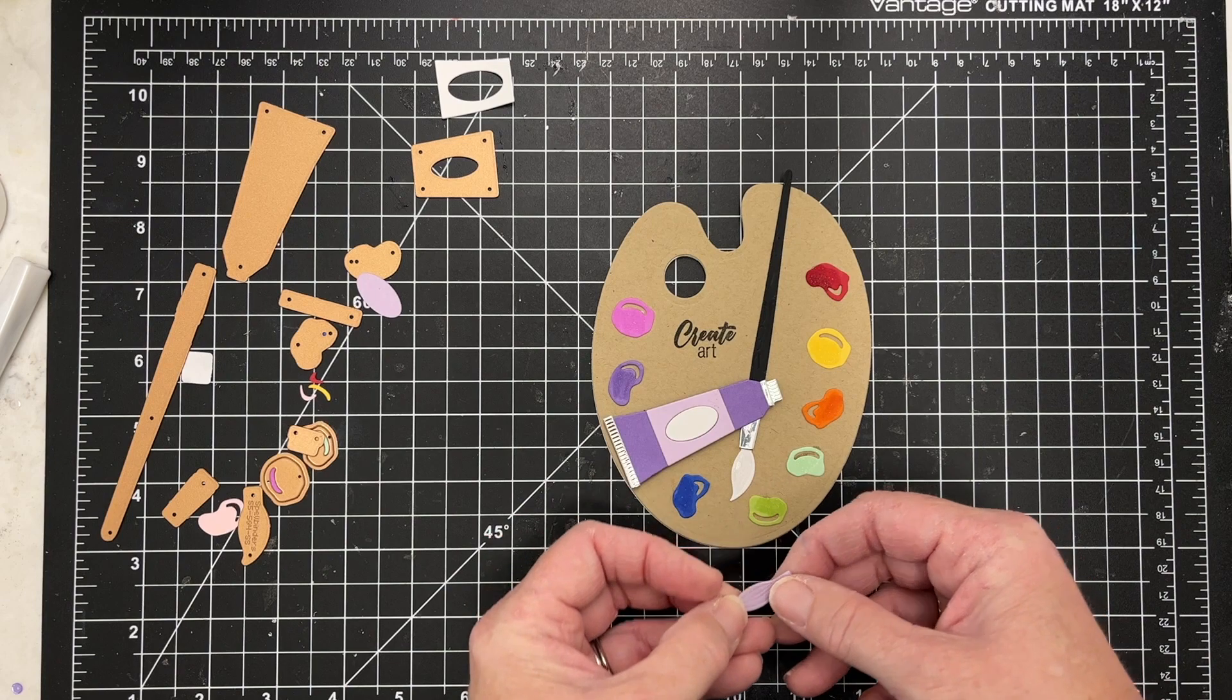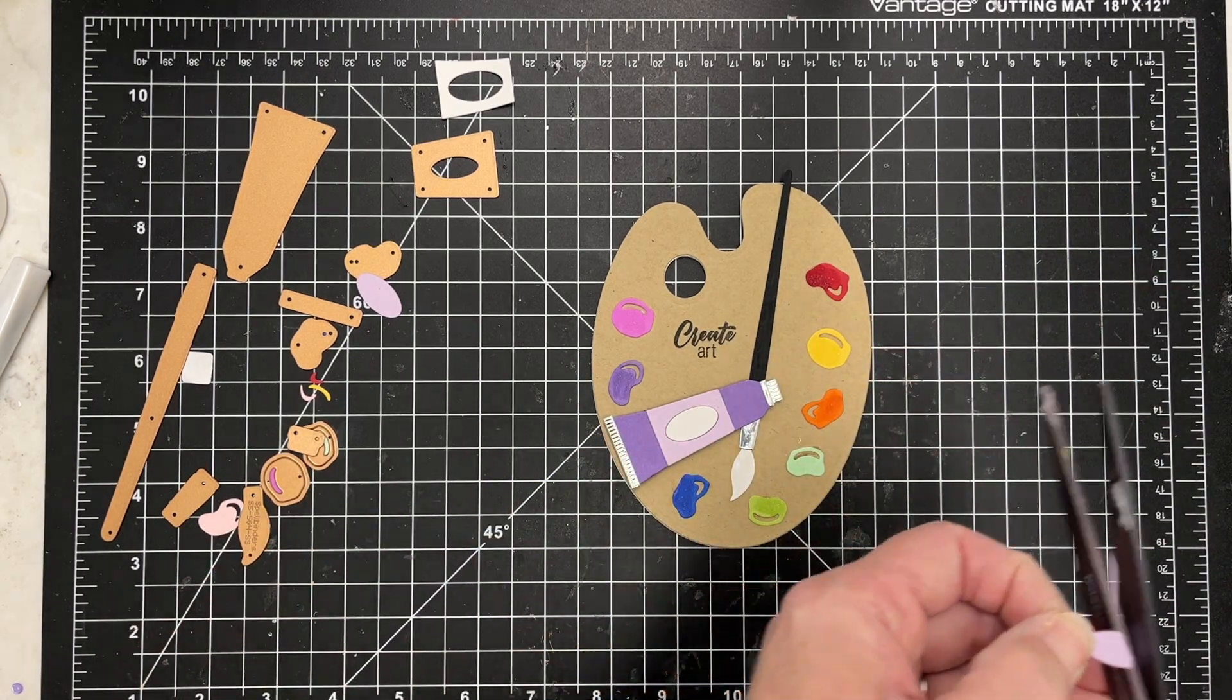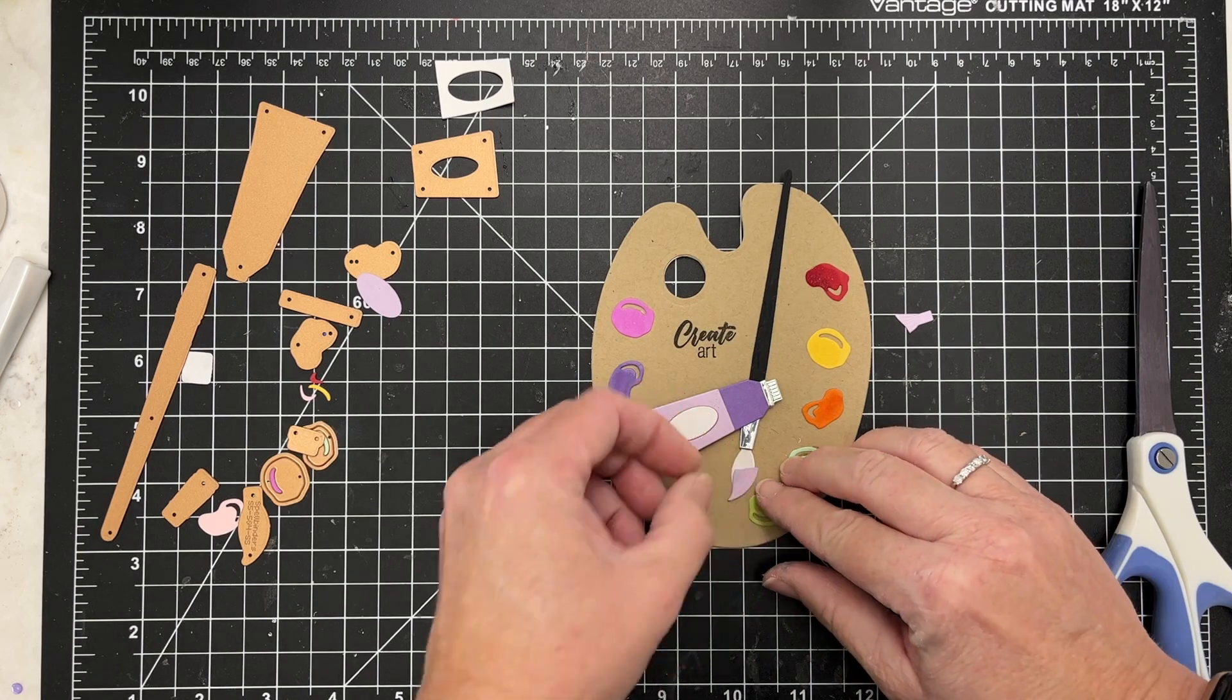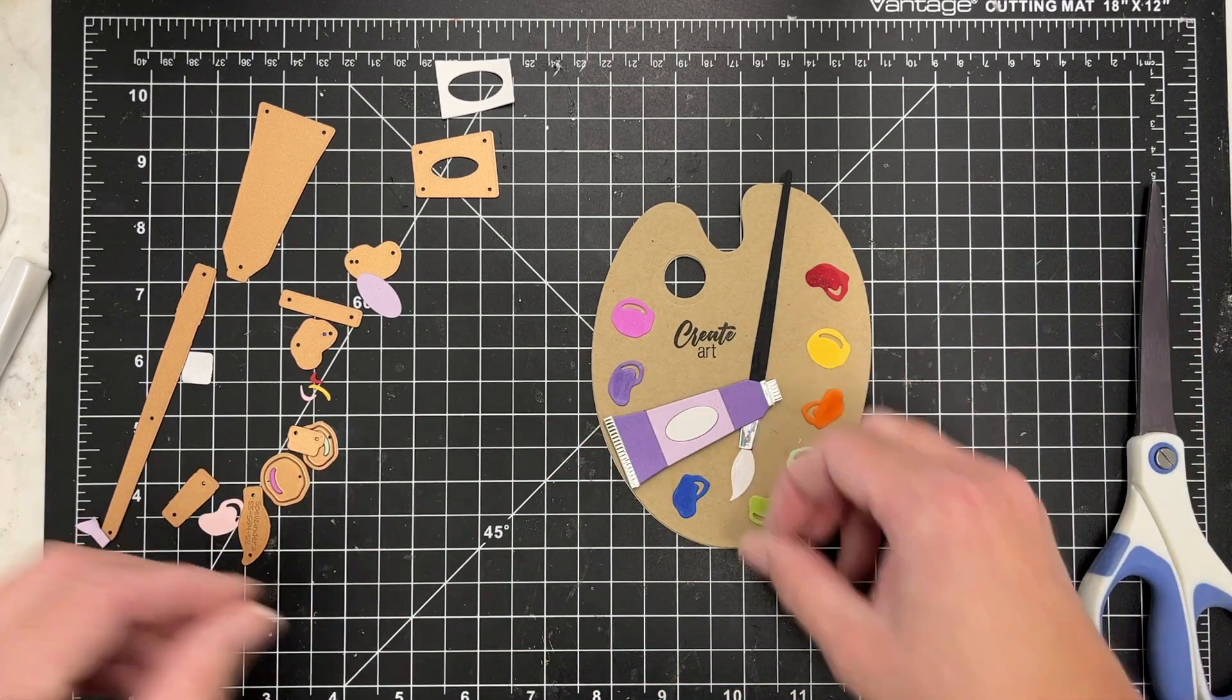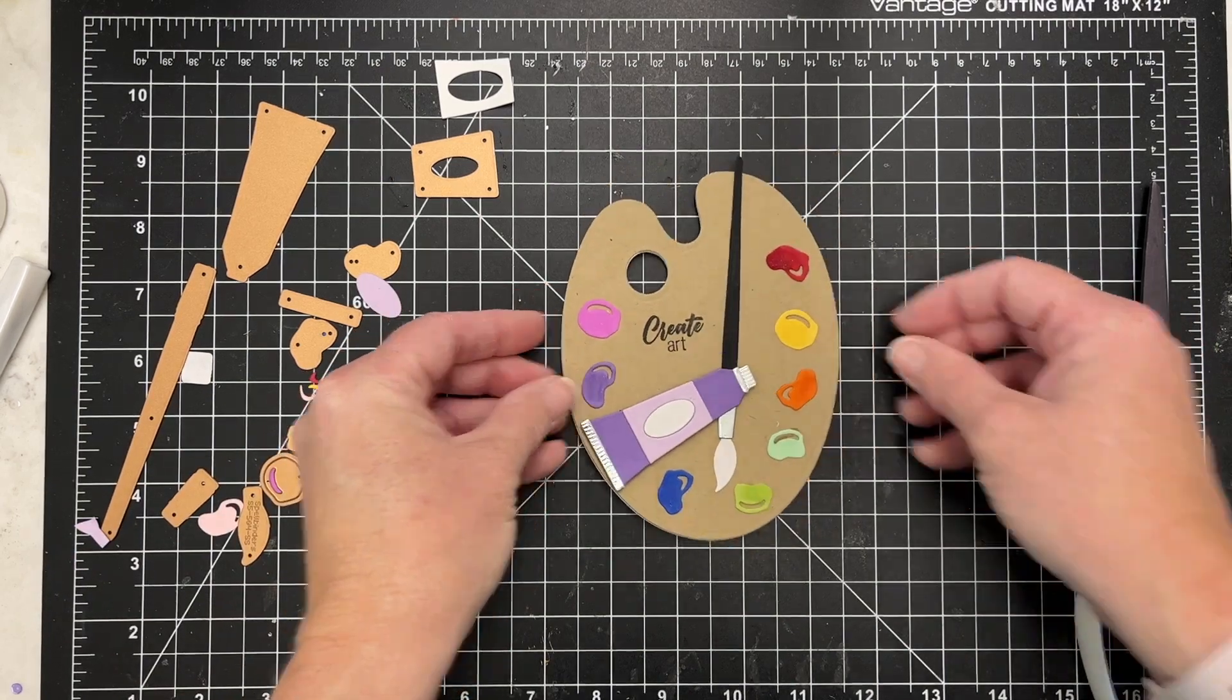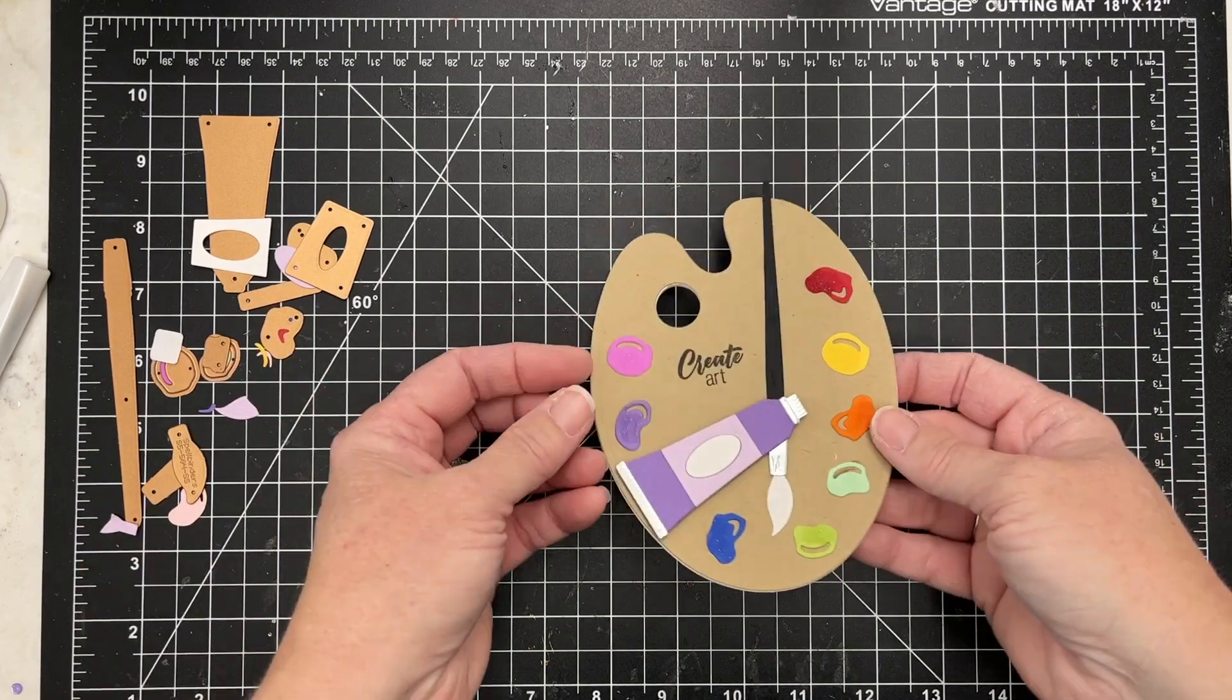And I did want to show you that if you wanted to make kind of a dipped brush, I just cut a second piece of another color. You can kind of trim that down and it'll look like you've got a little paint dripping off of your brush.